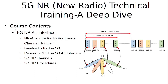Then we discuss the 5G New Radio air interface: what is the 5G NR absolute radio frequency channel number, what is the bandwidth part in 5G and how it is used, what is the resource grid used on the air interface of 5G, what are the 5G NR channels, and the procedures that are related to these 5G NR channels.